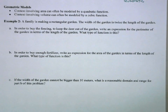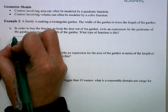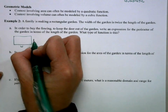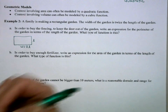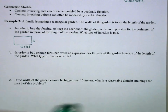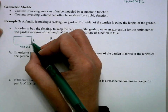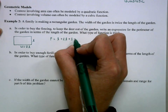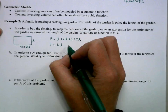A family is making a garden where the width is twice the length. In order to buy fencing to keep deer out, write an expression for the perimeter in terms of the length. Perimeter is the sum of the four sides: L + 2L + L + 2L, so the perimeter equals 6L. That is a linear function.